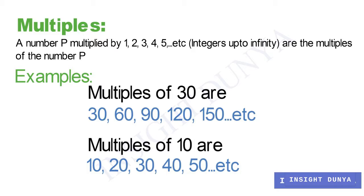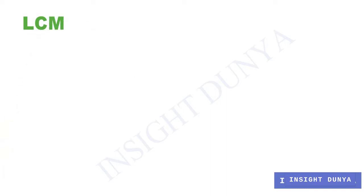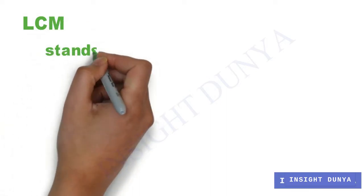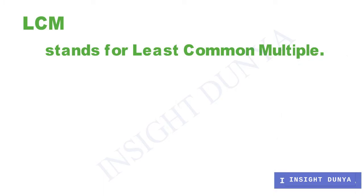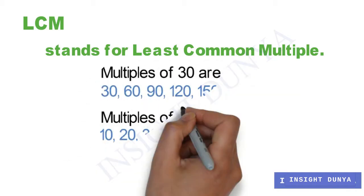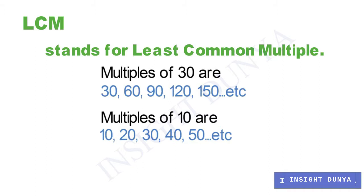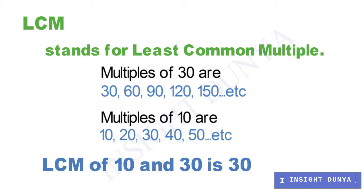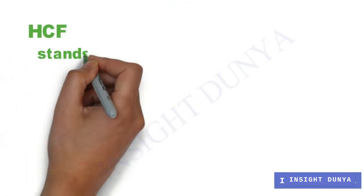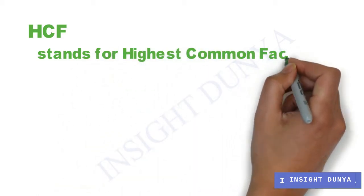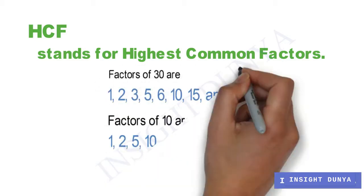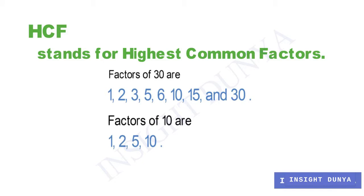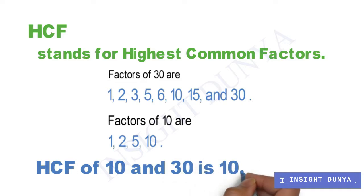Now we have a fair idea of factors and multiples. LCM stands for Least Common Multiple — the smallest multiple which is common in two or more numbers. For the examples above, the least common multiple of multiples of 10 and multiples of 30 is 30. On the other hand, HCF stands for Highest Common Factor — the greatest factor which is common in two or more numbers. The highest common factor of the factors of 10 and factors of 30 is 10, because 10 is the greatest number which exactly divides both 10 and 30.